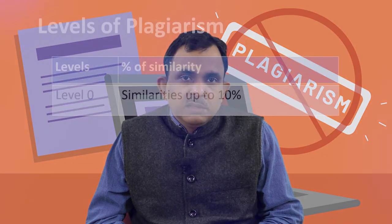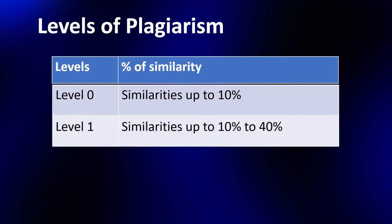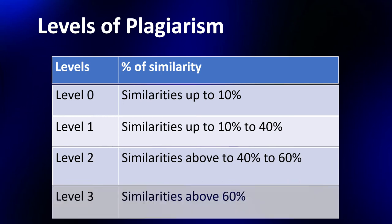Here come the levels of plagiarism. A unique classification has been proposed in UGC regulations for levels of plagiarism: Level 0 is similarity up to 10%, Level 1 is similarity from 10 to 40%, Level 2 is similarity up to 60%, and Level 3 is similarity above 60%.